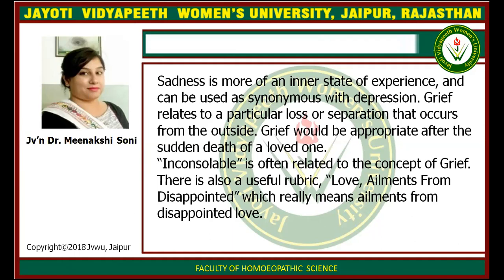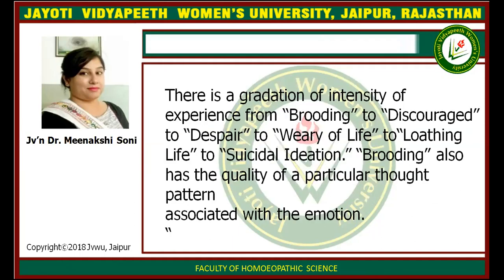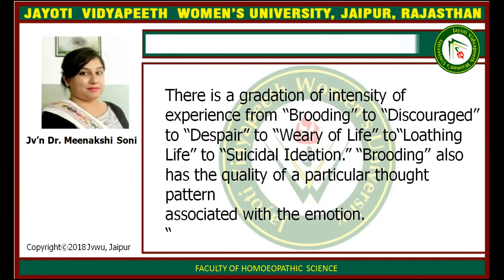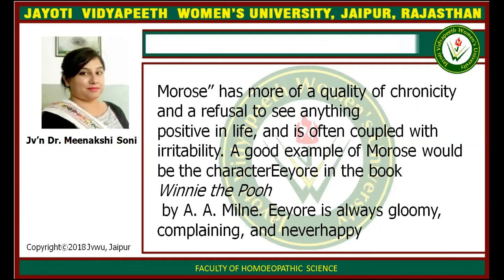There is a gradation of the intensity of the experience: from brooding, to discouraged, to despair, to weary of life, to loathing of life, to suicidal ideation. Brooding also has a quality of a particular thought pattern associated with the emotion. Morose has more of a quality of chronicity and a refusal to see anything positive in life, and is often coupled with irritability.